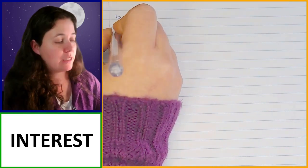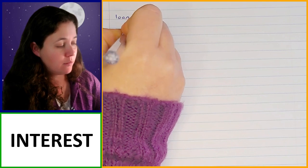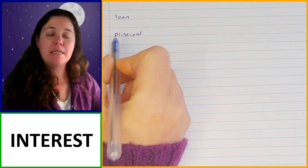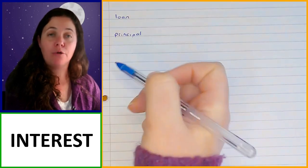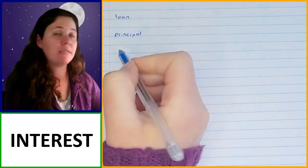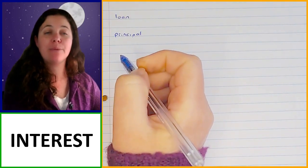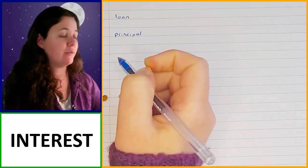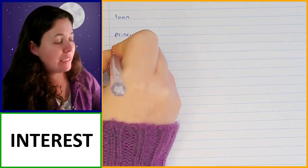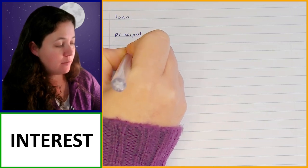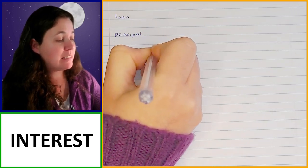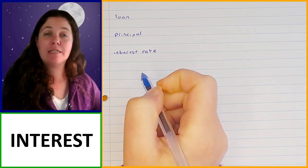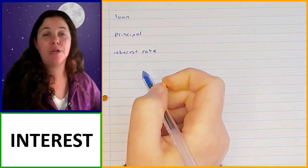Then we have got the principal. The principal amount is the amount of money that you either borrowed or invested — that's the amount of money that you started with at the beginning of your loan or your investment period. Then we've got the interest rate.